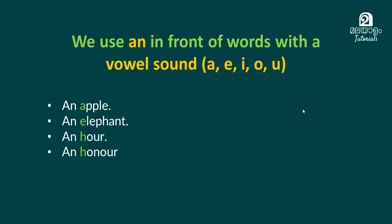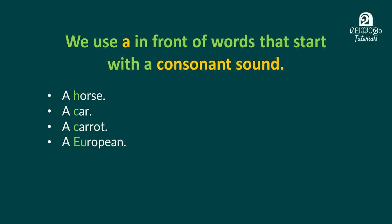Let's go to the slide. We use 'a' in front of words that start with a consonant sound. That's why we start with 'a': a horse, a car, a carrot, a European. 'European' starts with the sound 'yoo', which is a consonant sound. Each time we start with a consonant sound, we use 'a'.